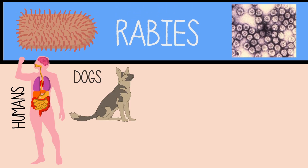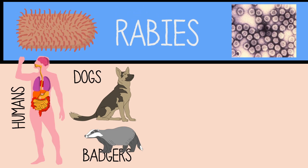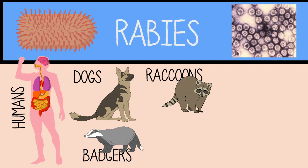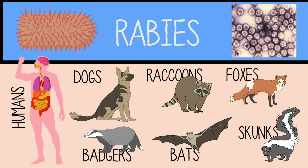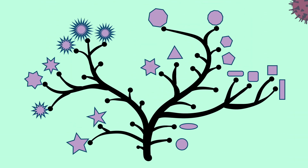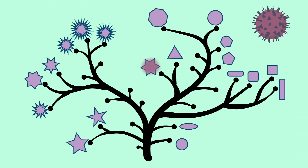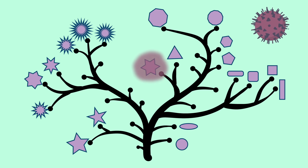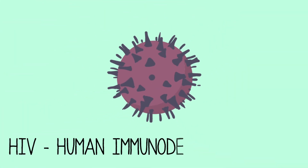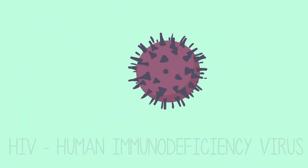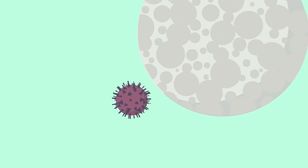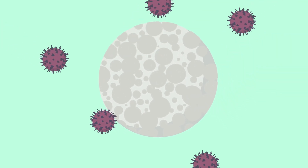The rabies virus can infect humans, along with dogs, badgers, raccoons, bats, and several others. Others are more choosy — they like a particular type of cell belonging to a particular species. Like HIV, the human immunodeficiency virus, which only affects human white blood cells.